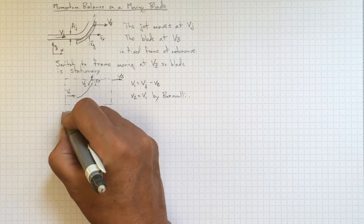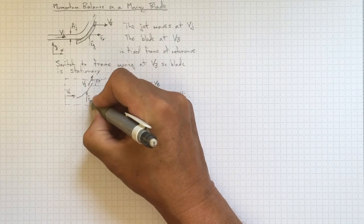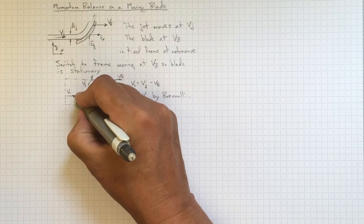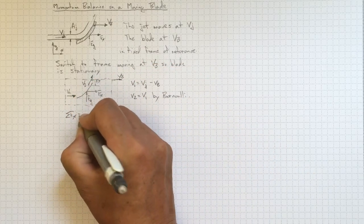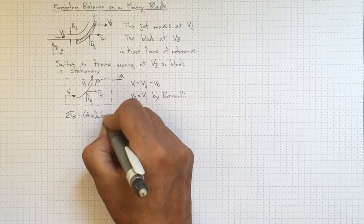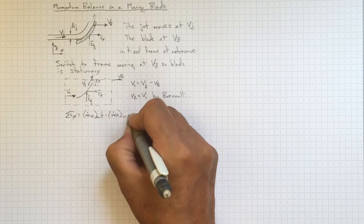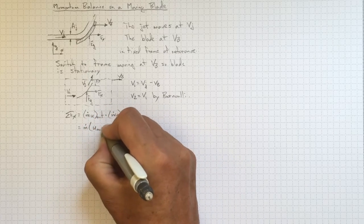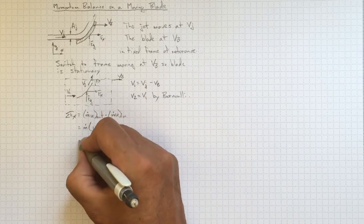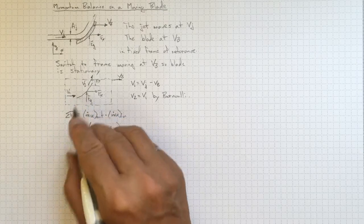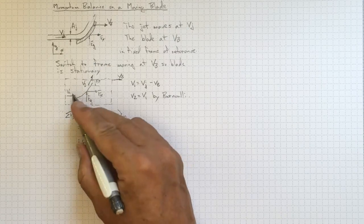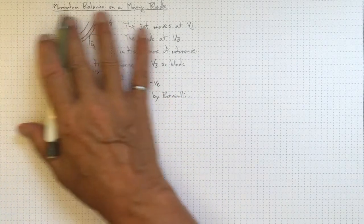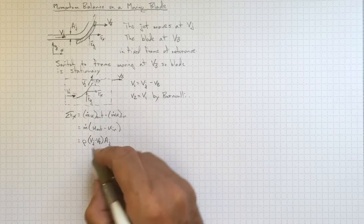Now that we've got this set out, we can find what the forces are in the y direction and in the x direction acting on the fluid to make it change from velocity V1 to velocity V2. The sum of the forces in the x direction will be equal to m-dot times u-out minus m-dot times u-in — the difference between the momentum going out and going in. Expanding out, m-dot equals rho times the relative velocity (Vj minus Vb) times the cross-sectional area of the jet Aj. The area remains the same even in the moving control volume.